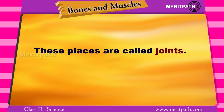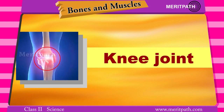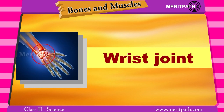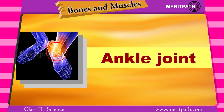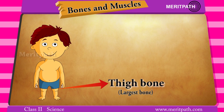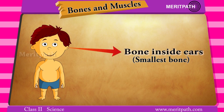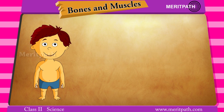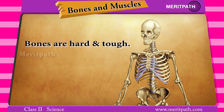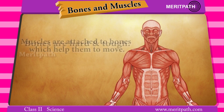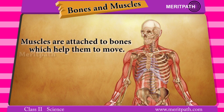Examples of joints include the elbow, knee, and neck. The largest bone is the thigh bone, and the smallest bone in the body is the bone inside our ears. Bones are hard parts which cannot move on their own — muscles are attached to bones which help them to move.